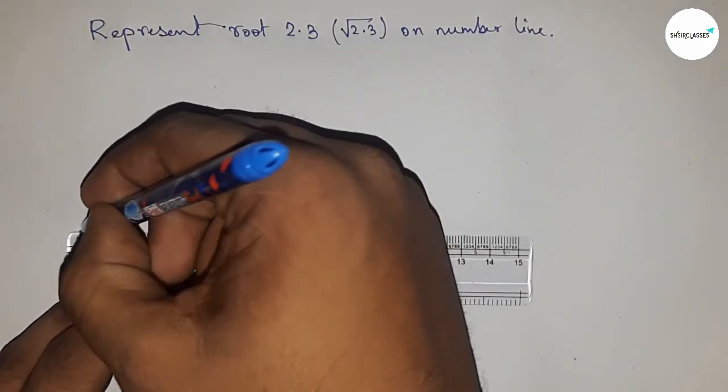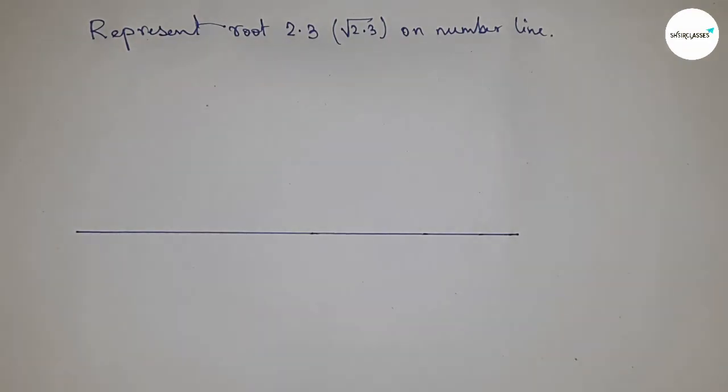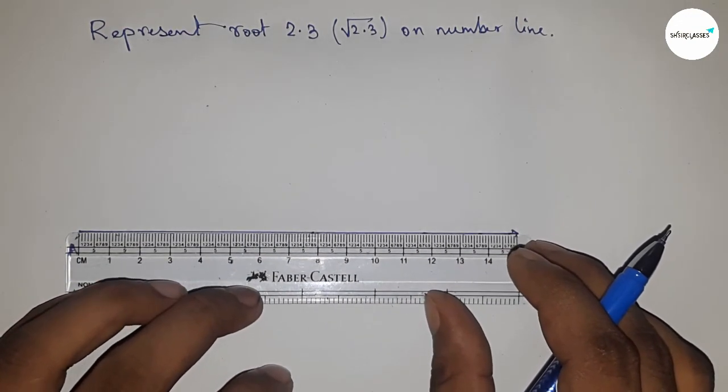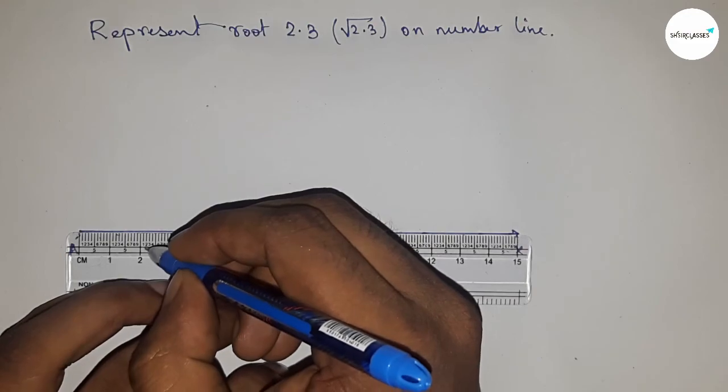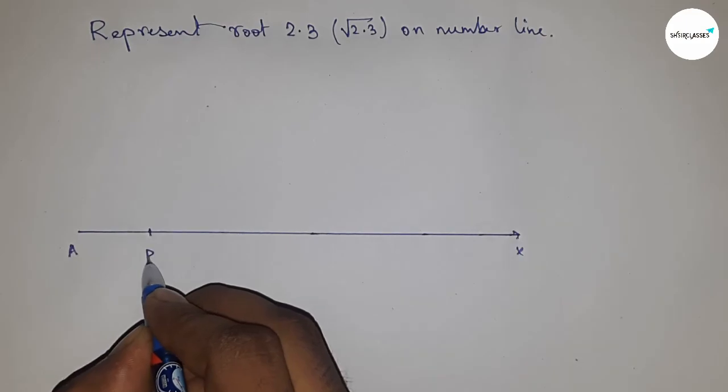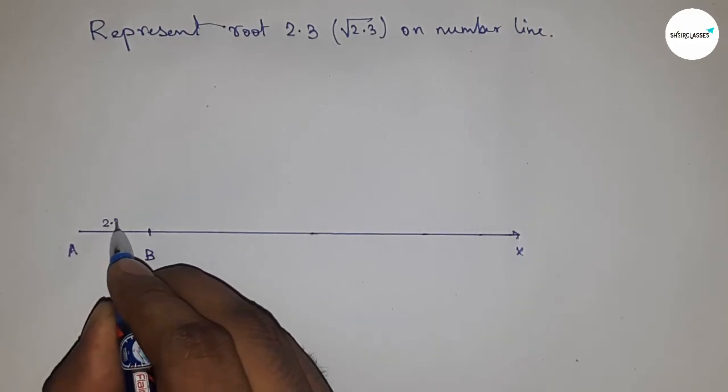First, draw a line of any length. This is the AX line. Next, take a distance of 2.3 centimeters using a scale. Mark point B so that AB equals 2.3 centimeters.